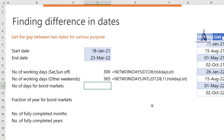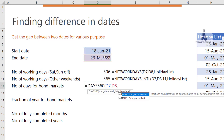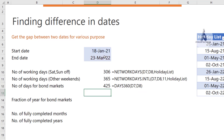In the bond market, a 30/360 day convention is sometimes used, which assumes every month has 30 days regardless of whether it's January, February, or July. To apply this, use the DAYS360 function, specifying the start date and end date. There is also a slight difference between US and European conventions for how the last days of a month are treated, and you can choose your convention in the function.